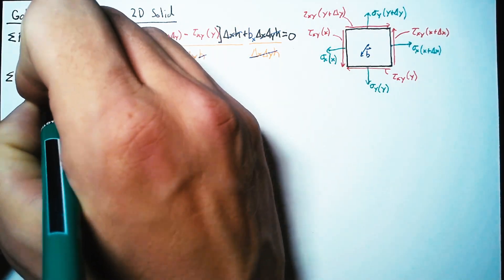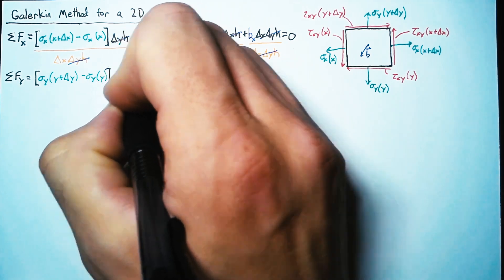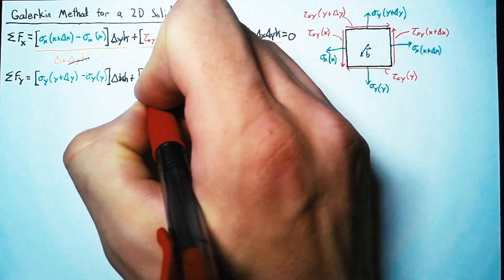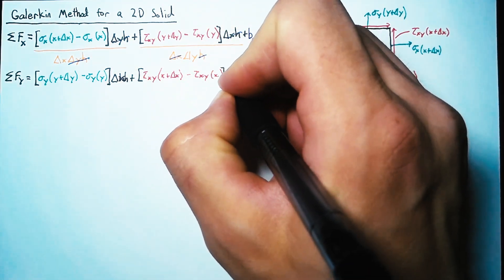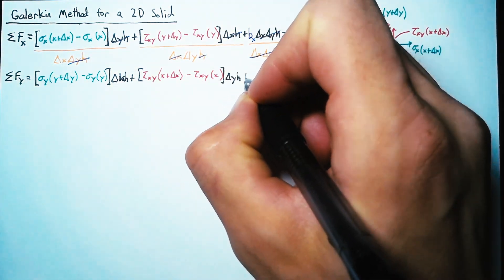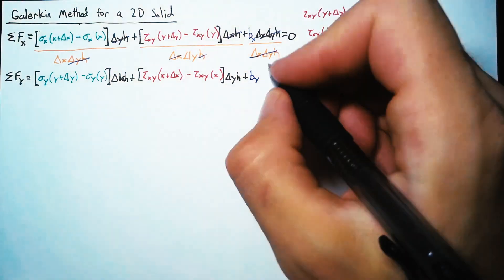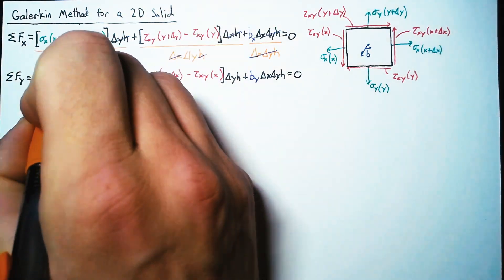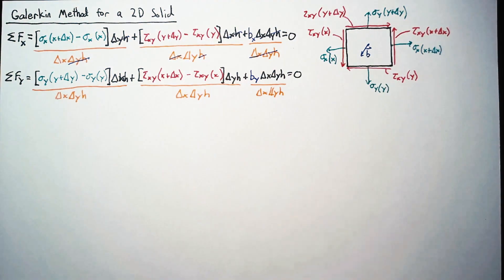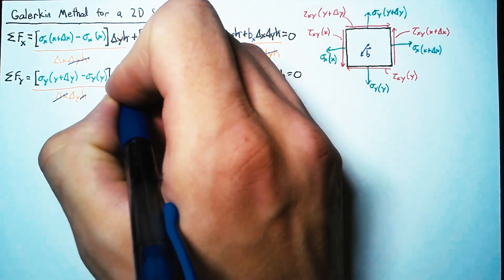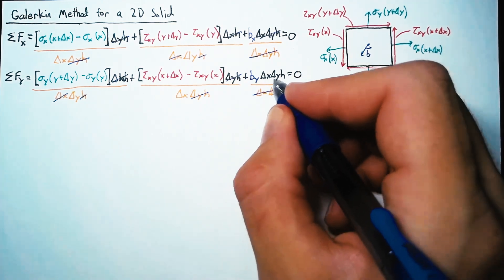In the y direction, we're looking at sigma y, multiplied by the distance delta x. Then our shear stresses, this time along the sides, multiplied by delta y times h. Then we have our body force in the y direction, again multiplied by the volume. Once again, we divide through by that volume, leaving delta y in the first term, delta x in the second term, and nothing in the third term.